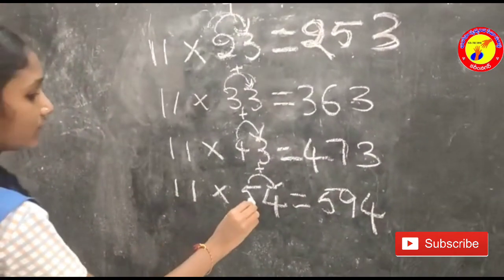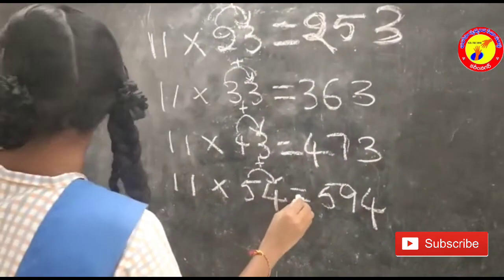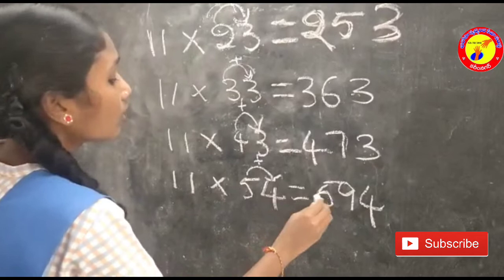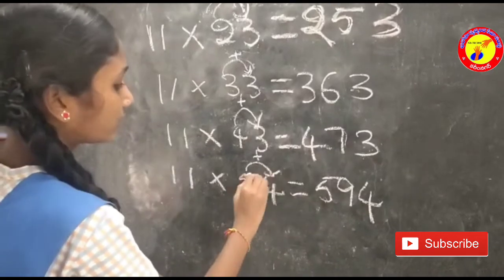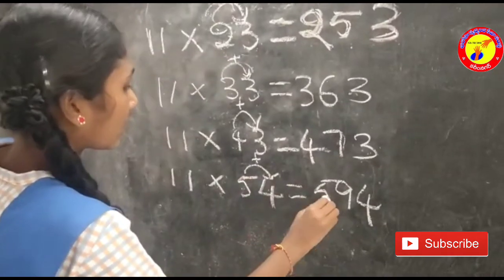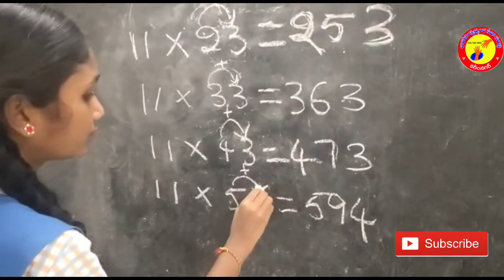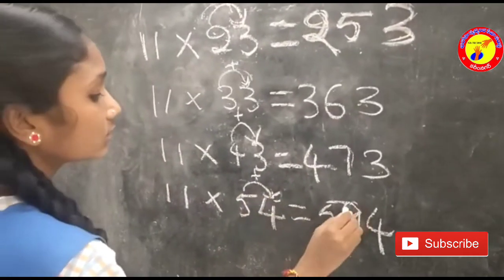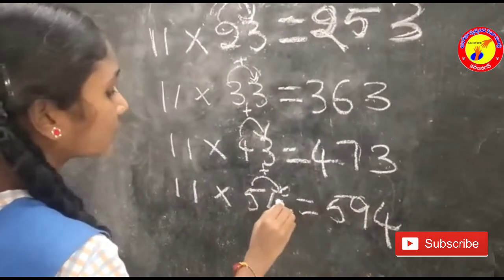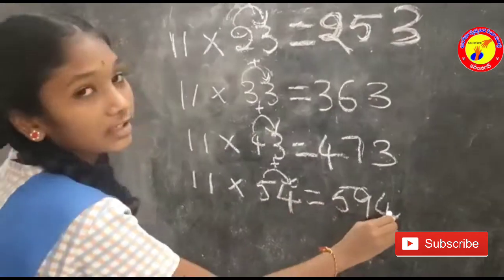11 into 54 is equal to: this 5 is here, 5 plus 4 is equal to 9, and this 4 is here. So the answer is 594.